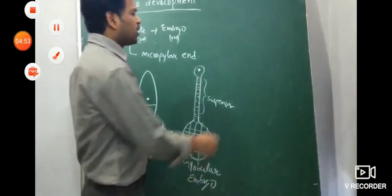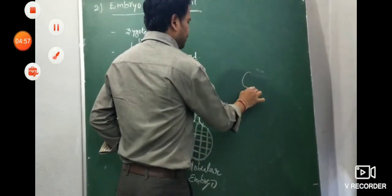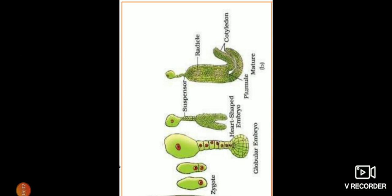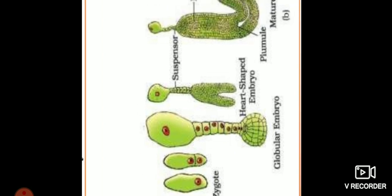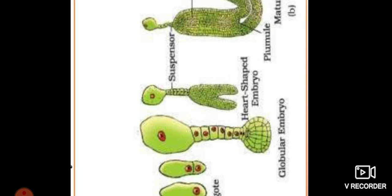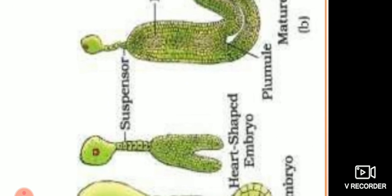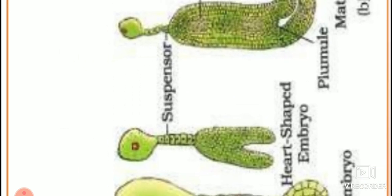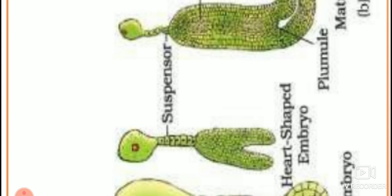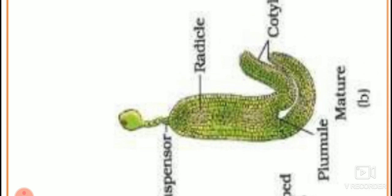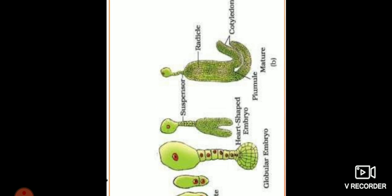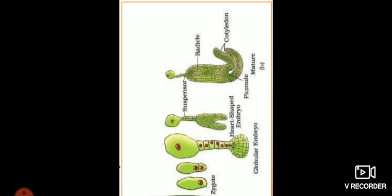After the globular embryo, a heart-shaped embryo is formed, and then the mature embryo develops. The mature embryo consists of cotyledons and the embryonal axis — which includes the radicle and plumule. This is a two- or three-mark theory question: briefly write about embryonic development with a suitable diagram.